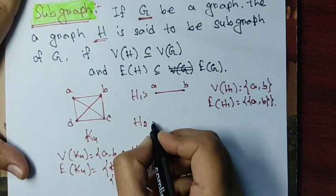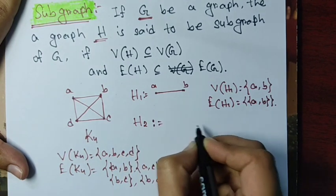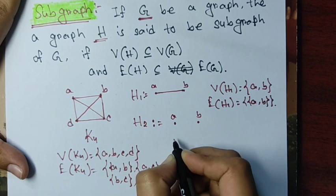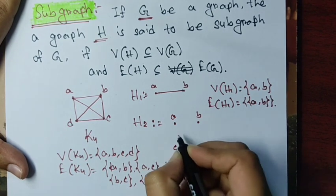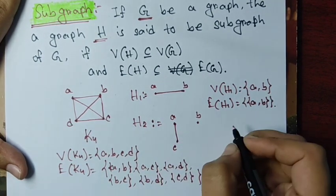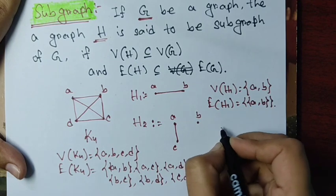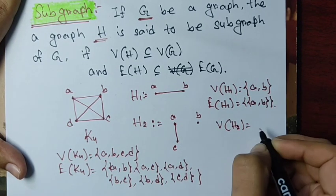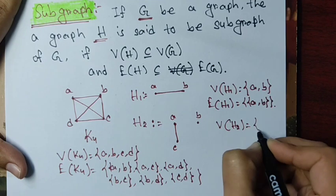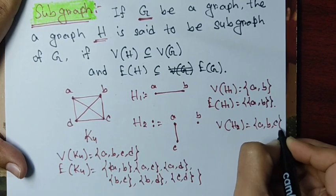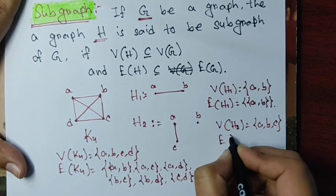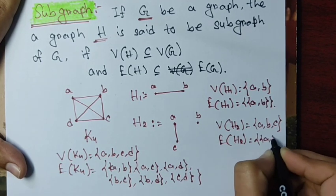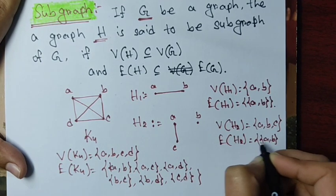We can have another subgraph say H2 on three vertices A, B, and C. Here V(H2) = {A, B, C} and E(H2) = {AB} — only one edge.